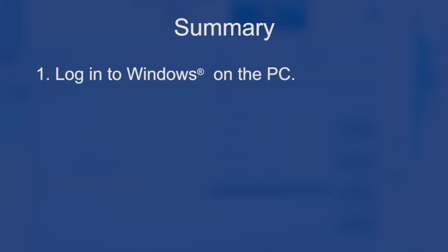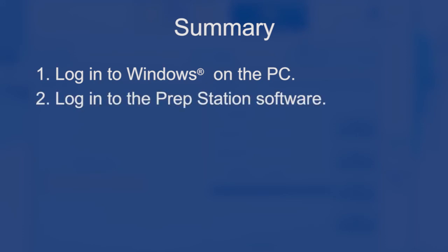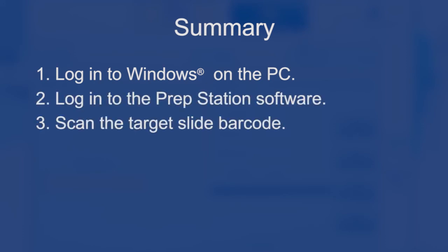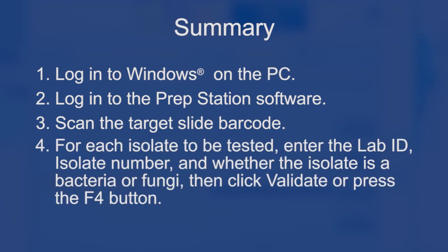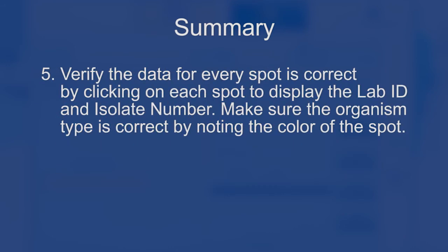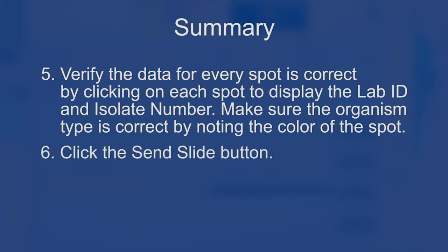Summary: Log in to Windows on the PC. Log in to the PrepStation software. Scan the target slide barcode. For each isolate to be tested, enter the lab ID, isolate number, and whether the isolate is bacteria or fungi, then click Validate or press F4. Verify the data for every spot is correct by clicking on each spot to display the lab ID and isolate number. Make sure the organism type is correct by noting the color of the spot. Click the Send Slide button.